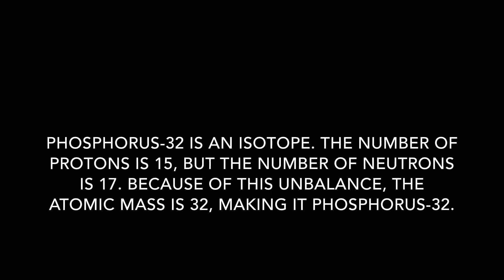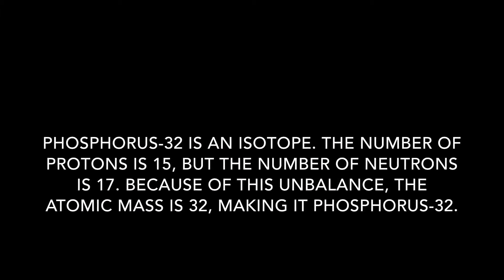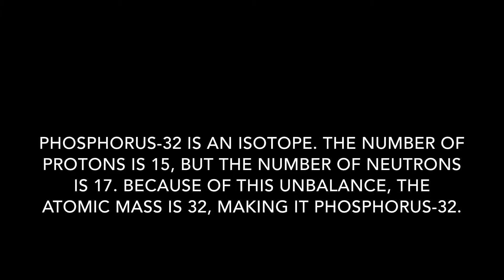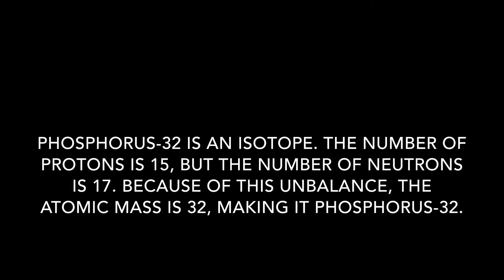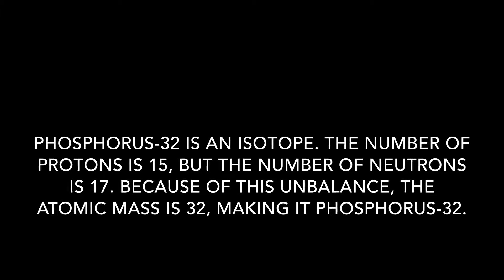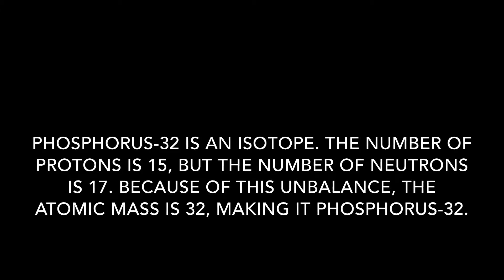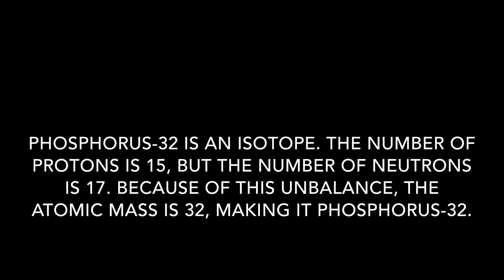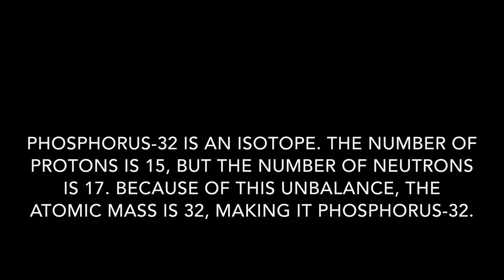Phosphorus 32 is an isotope. The number of protons is 15, but the number of neutrons is 17. Because of this unbalance, the atomic mass is 32, making it Phosphorus 32.